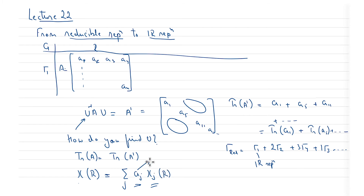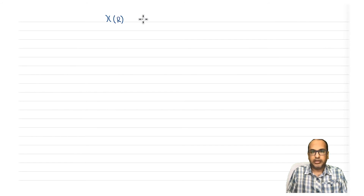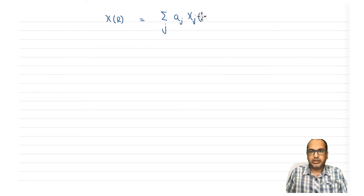The problem is we don't know how to find AJ. We know how to write irreducible representations from scratch using GOT, and we know how to write a reducible representation given any basis set — so we can find the trace of any matrix under a reducible representation. But finding AJ is the challenge. So let's work out the mathematics and write down: chi(R) = sum over J of AJ * chi_J(R).